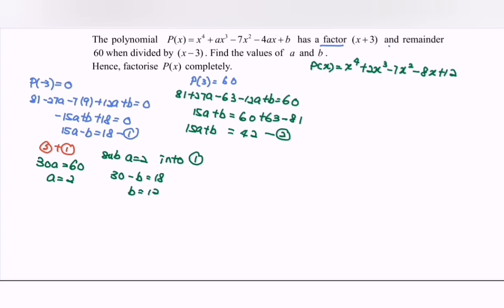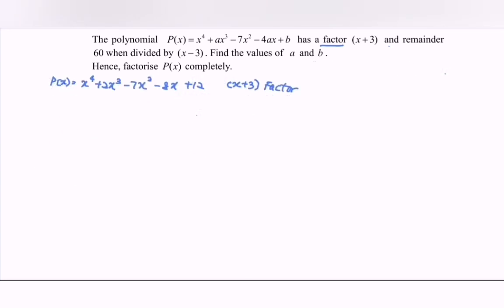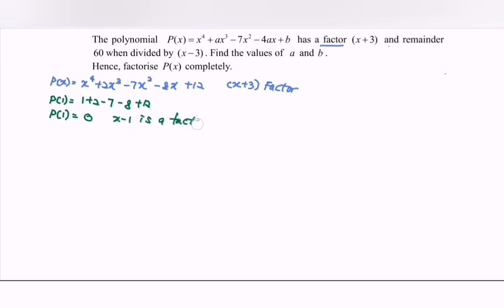Referring to the question again — factorize completely. We have to factorize the situation completely. Since we only have one factor so far, we use the trial-and-error method to find another factor. For example, P(1): we have 1 + 2 - 7 - 8 + 12. If we calculate, we notice that P(1) is equal to 0.